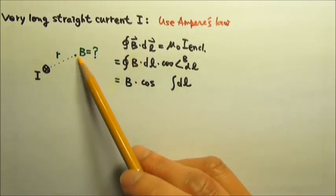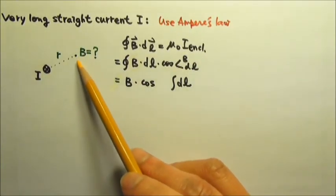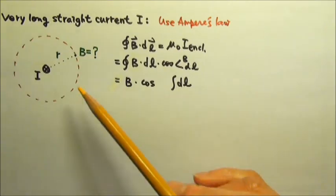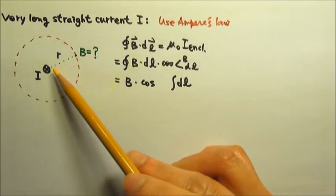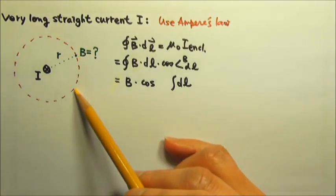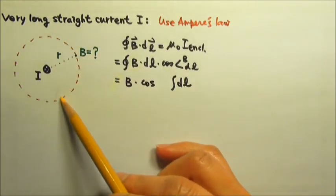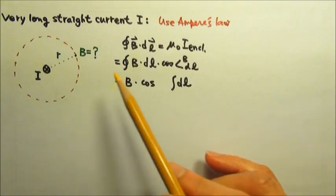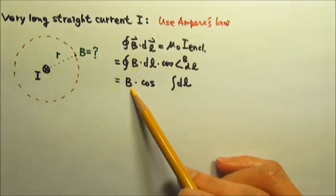We also need our Ampere's loop to go through the point we are interested in. So the loop must be a circle with radius r. By symmetry, the strength of the magnetic field must be the same everywhere on the circle, which allows us to take the B out of the integral.